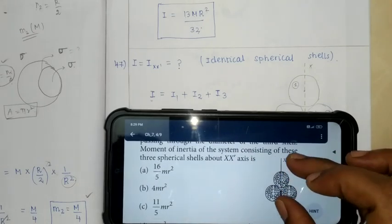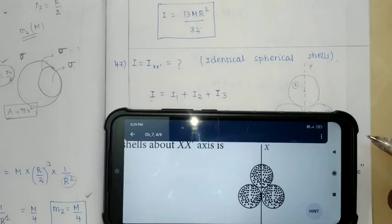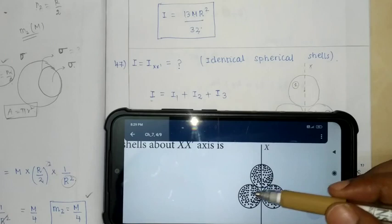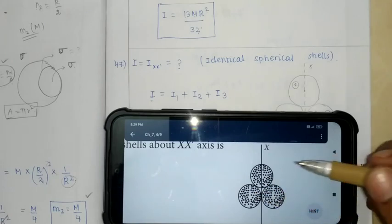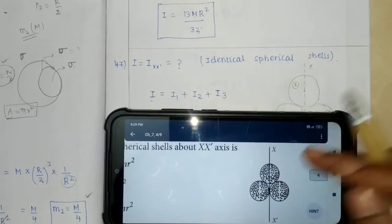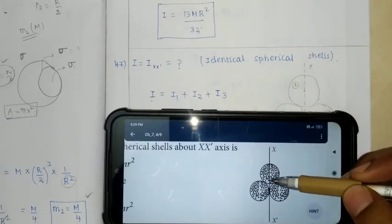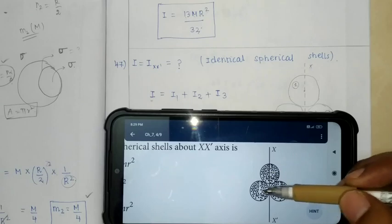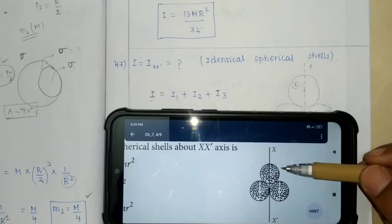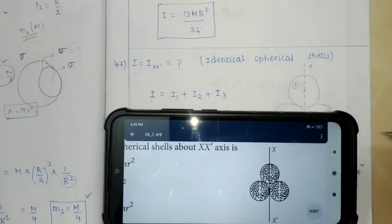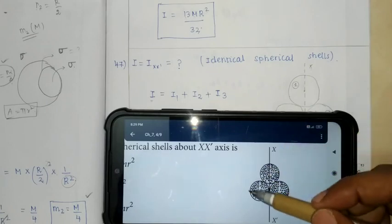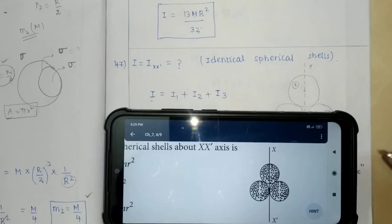Three identical spherical shells, mass m and radius r. xx' is one axis. On the axis is one spherical shell diameter. The two spherical shells are the same way positioned. This axis is xx'. How do we find it?